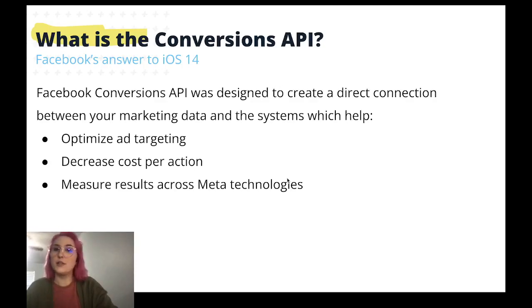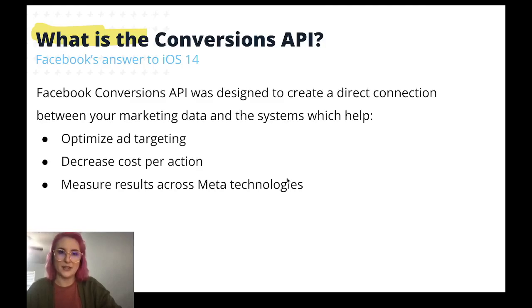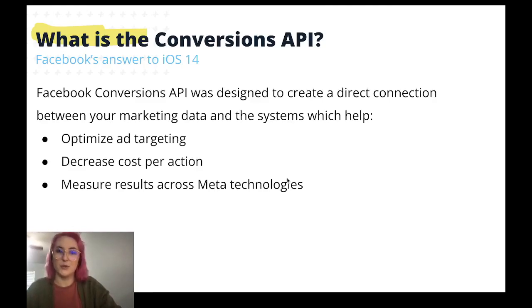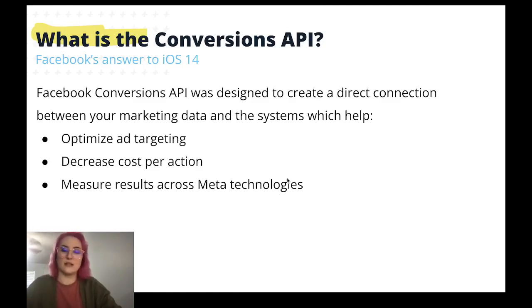This is something that's fairly new to the Facebook network — it hasn't been around for too long, maybe just a few months or so. It was designed by Facebook as an answer in part to iOS 14, as a lot of people were seeing a lot of data being lost due to tracking issues. So this was designed to create a direct connection between your marketing data on your servers and the Facebook systems, which can help optimize your ad targeting, decrease your cost per action, and help you measure results across all the Meta technologies.